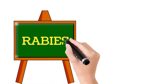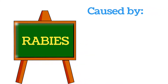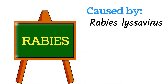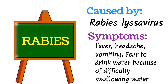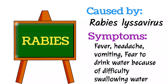The first disease is rabies. Rabies is caused by the rabies lyssavirus, and this disease is developed due to the biting of an animal which is infected with this rabies virus. The symptoms of this disease include fever, headache, vomiting, and the person with rabies usually fears water — they are not able to drink water due to difficulty in swallowing.